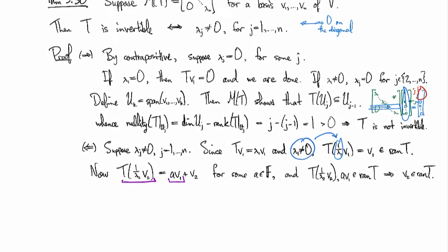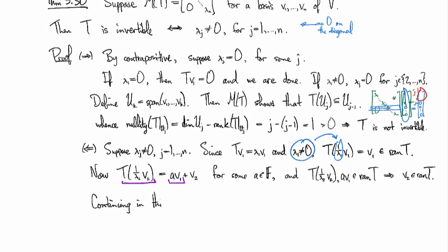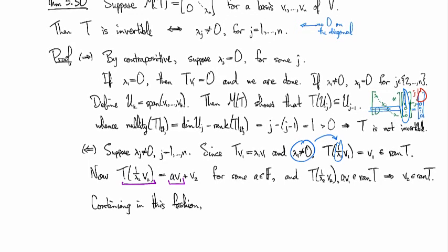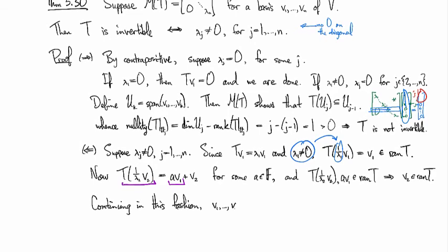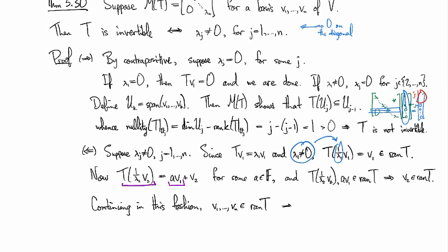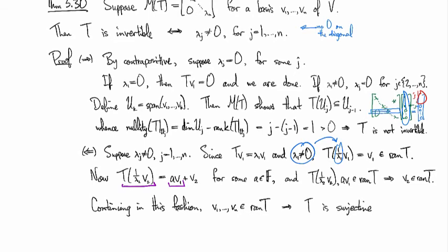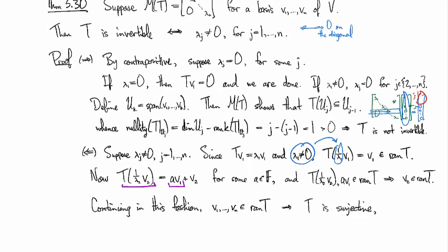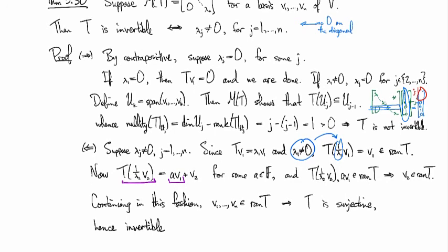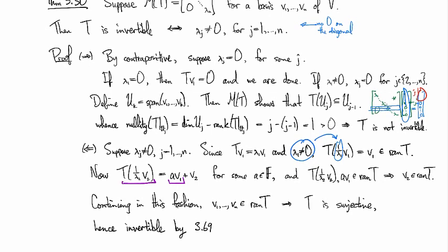Continuing in this fashion, we end up with v_1 through v_n in the range of T. That means T is surjective because every element of the basis is in its range. And if it's surjective, then it's invertible because we're dealing with an operator, so it's injective if and only if it's surjective by 3.69.